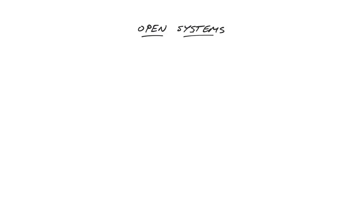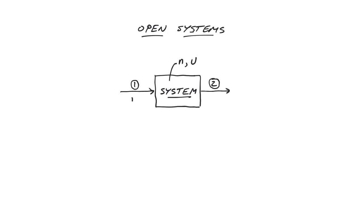For open systems, the question is usually a bit different. First, our system is not a fixed group of molecules as it is in a closed system. Rather, it's usually a fixed volume of space through which molecules are flowing, often at steady state. Under these conditions, the internal energy and number of moles in our system is not changing with time. However, we may have streams entering and exiting, carrying a certain number of moles of molecules in or out of the system, and these molecules carry with them a certain amount of internal energy.